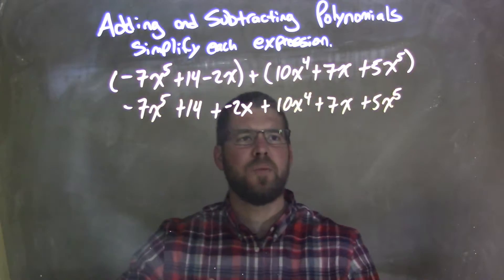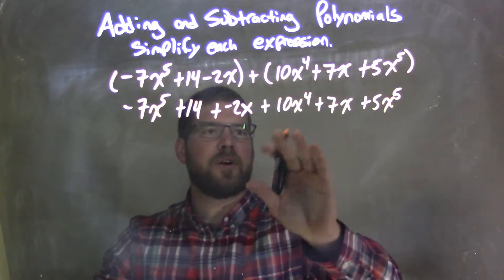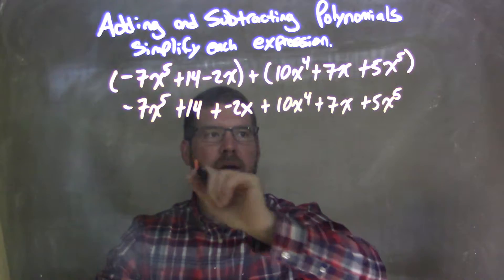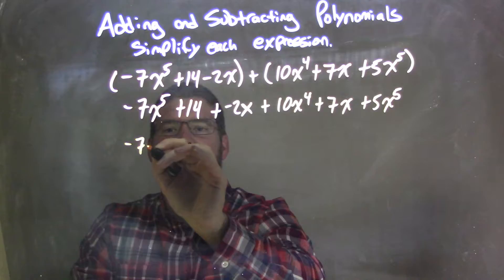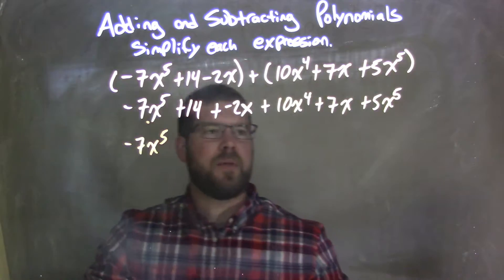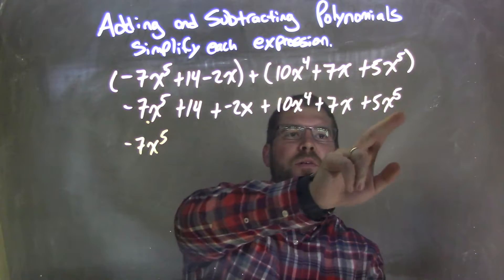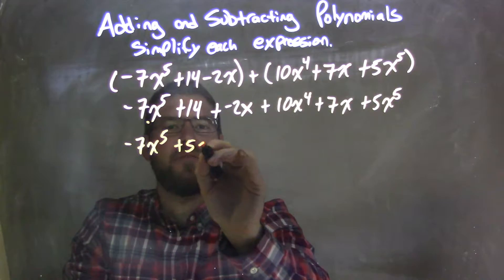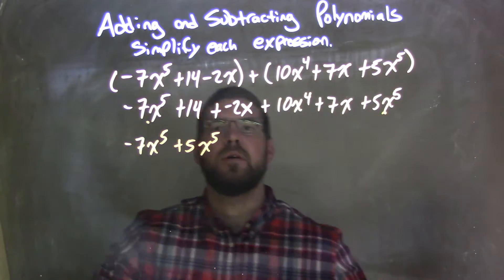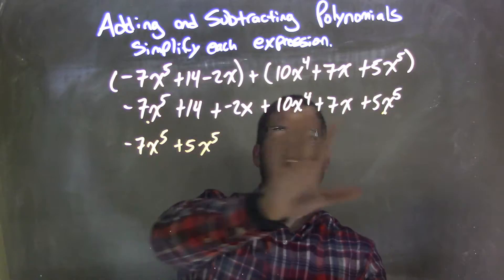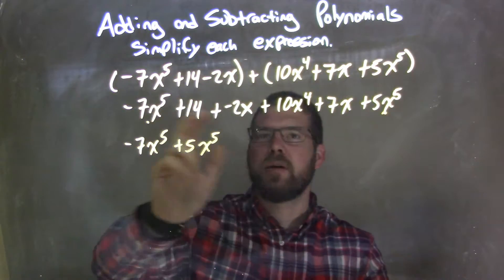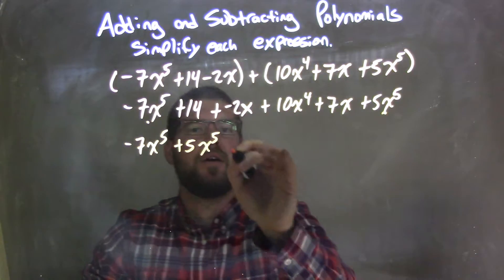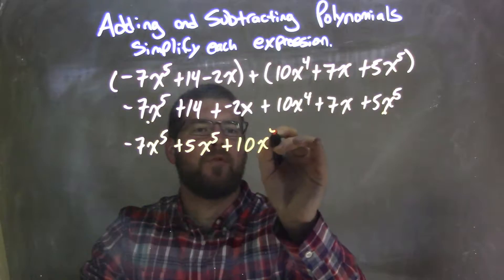Now I'm going to rearrange using the commutative property, highest degrees first. The highest degree I see is the 5th power: -7x^5. The next 5th power I saw was 5x^5, so plus 5x^5. I see nothing else to the 5th power. Now the 4th power - I see 10x^4, so we add 10x^4.